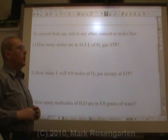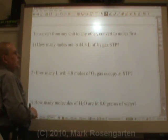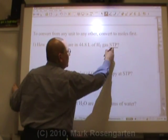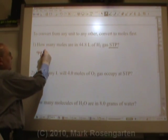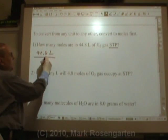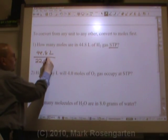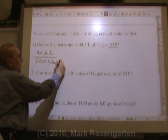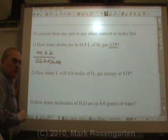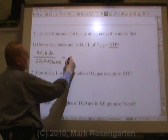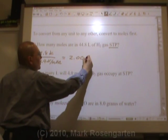So, how many moles are in 44.8 liters of H2 gas at STP? What this tells us is that we're allowed to use 22.4. So, we take 44.8 liters divided by 22.4 liters per mole. So that liters cancel. Convert to moles, divide by your conversion factor. This gives us 2.00 moles.